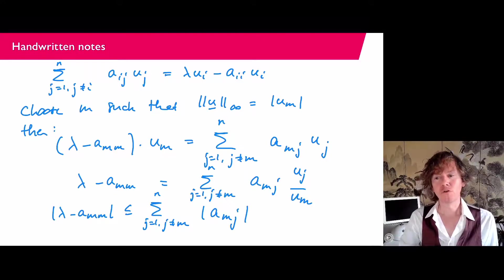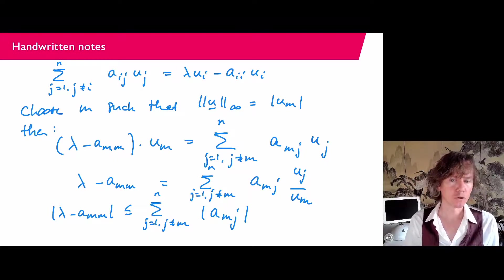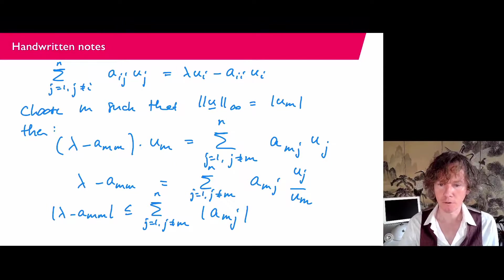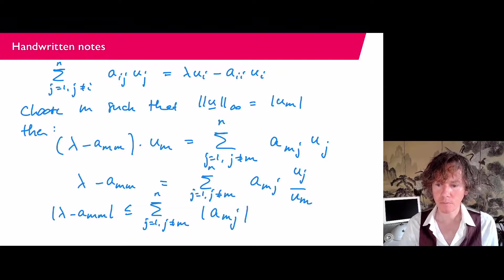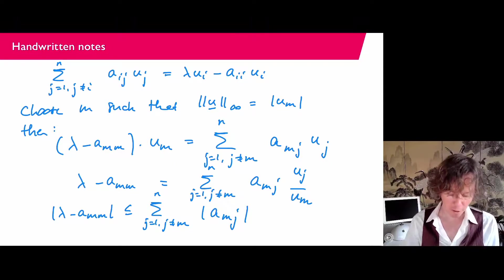Taking absolute values, we find that absolute value λ minus A_MM is less or equal sum j is 1, j unequal to M, up to n, A_MJ times the absolute value of U_J over U_M. But I'm not going to write them down because they're less or equal 1. So I only make it bigger if I skip them here.